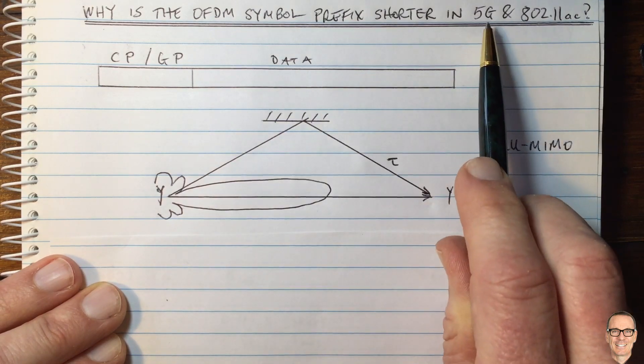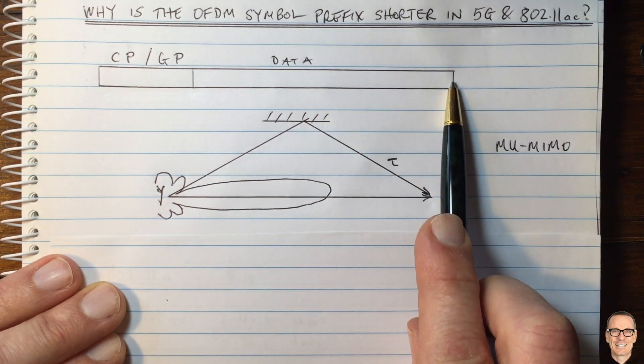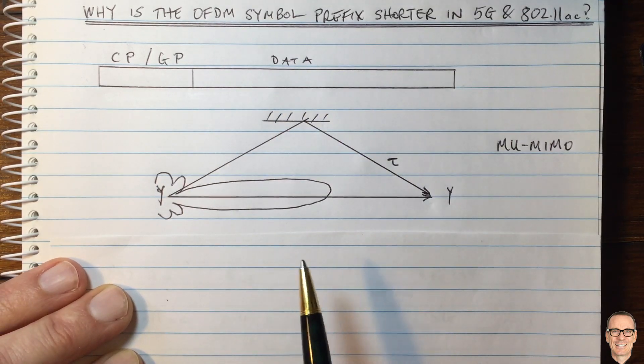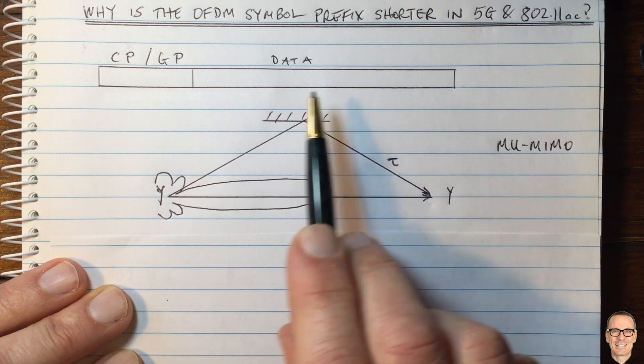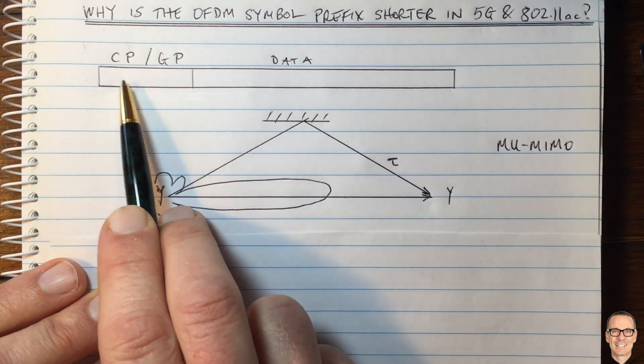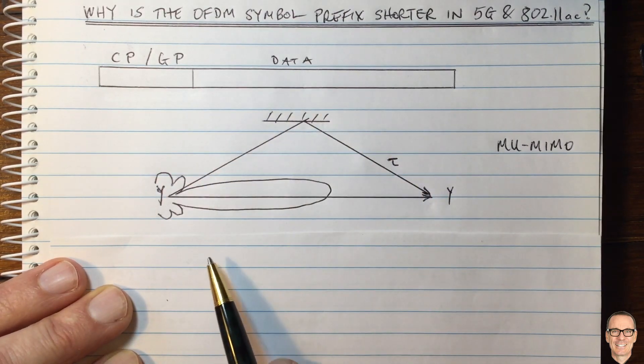There are other aspects of these new systems which tend to mean you have a shorter data period. This is covered in a video in the description below about subcarrier spacing. Importantly, it's the ratio of the two which tells you how efficient the process is.